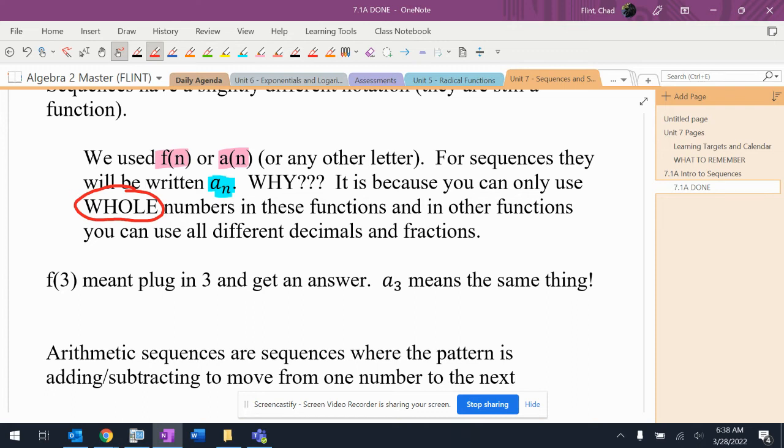That's the best reason I can give you as to why they're written differently. But if you in your brain just remember that these two things in essence mean the same thing, then we're good. So just like before, F of three meant plug in a three. A of three means plug in a three. So we're going to be doing basically the same thing.